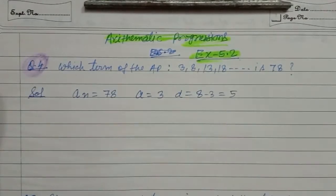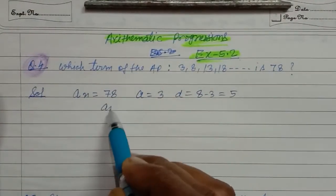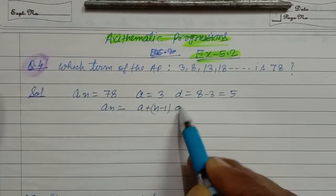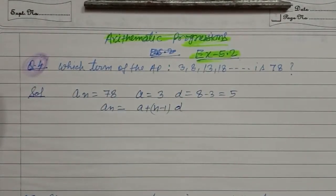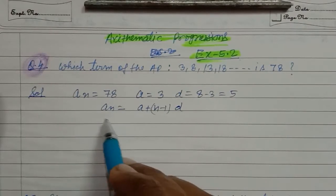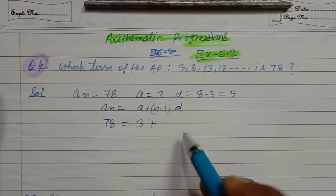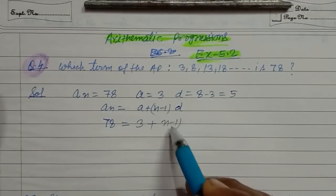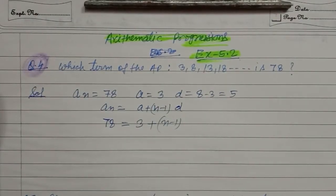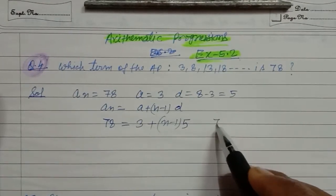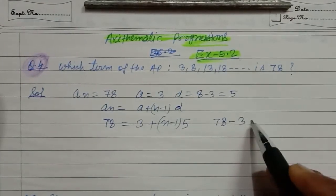a2 minus a1 equals 5 آگیا۔ اب students formula میں value put کر دیجئے: an is equal to a plus n minus 1 into d۔ اس میں ہمیں n کی value find کرنی ہے۔ تو an ہے ہمارا 78، a ہے 3، اور n minus 1 into d، تو d کی value ہے 5۔